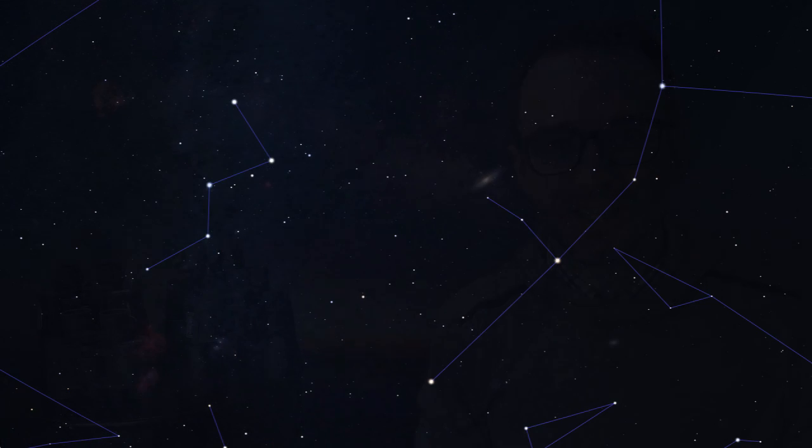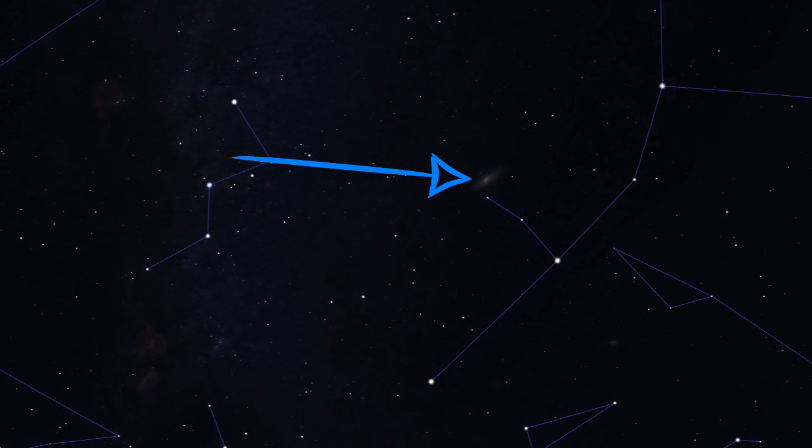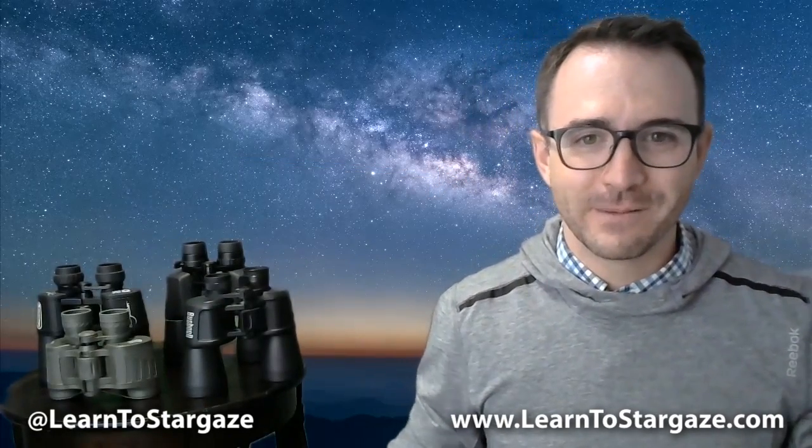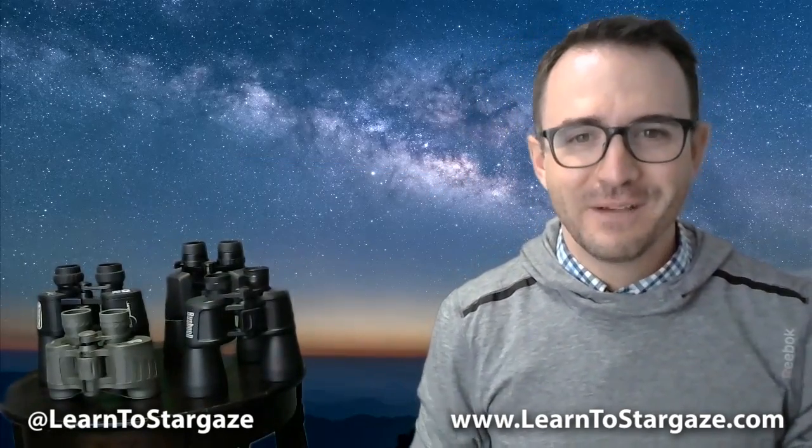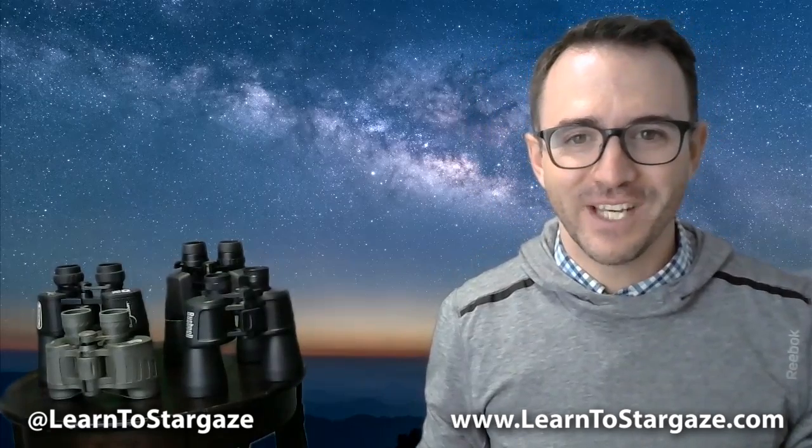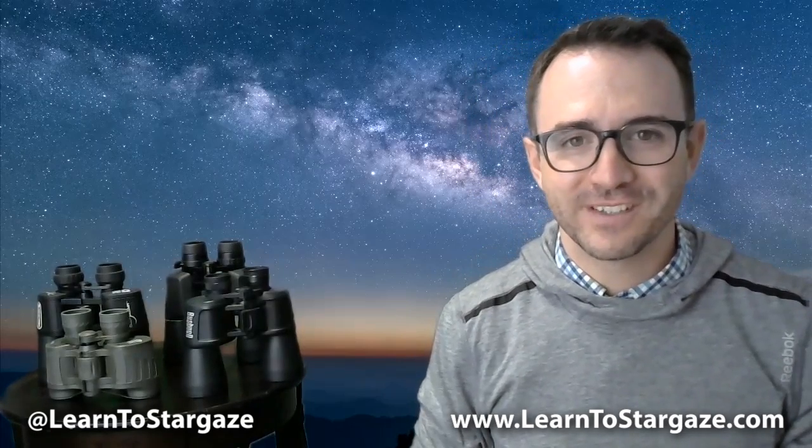And if it's the fall, try to find the Andromeda Galaxy. I use these stars in Cassiopeia to form an arrow that points right at the galaxy. Well, I hope you enjoyed learning to observe the night sky with binoculars. Please subscribe so you don't miss the next video. And remember, the future is looking up.